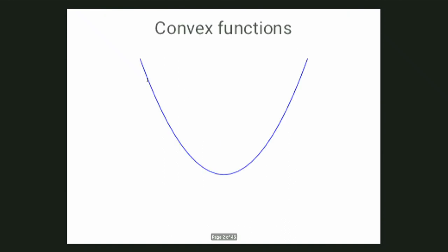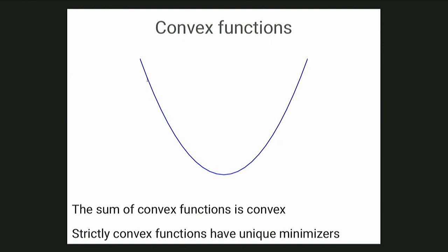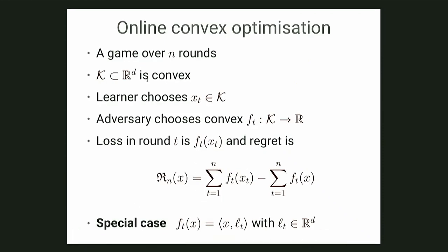Convex functions are good because they have minima we can easily find via gradient descent. They have two really nice properties: first, the sum of two convex functions is again convex. Second, if it's strictly convex — with a strictly positive second derivative or strictly positive definite Hessian — then you have a unique minimizer. That's why we like convex functions.